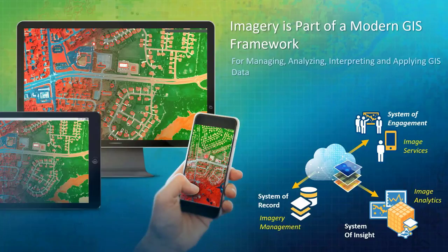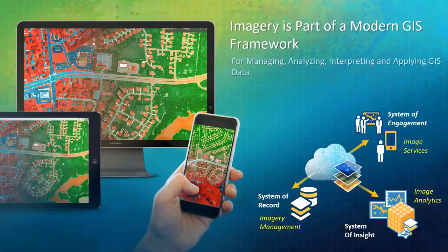GIS provides a modern framework for managing all types of geospatial information, and it can do the same for remotely sensed imagery. ArcGIS provides three main things: a system of record for imagery management, a system of insight for the ability to analyze imagery, and a system of engagement that allows you to share data insights as image services in the Esri geospatial cloud. Together these three are the foundational capabilities of the ArcGIS imagery platform.